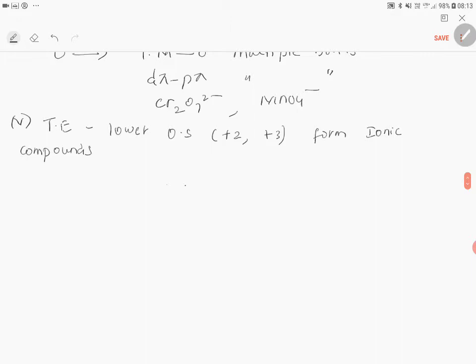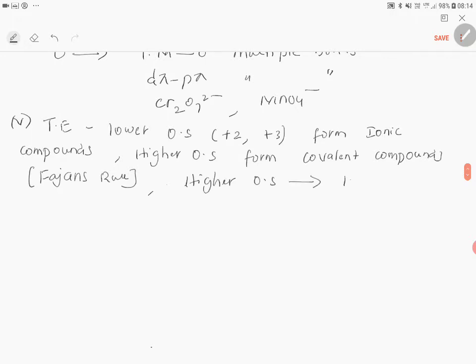While higher oxidation states form covalent compounds too. This is in accordance to Fajan's rules, what you have learned in chemical bonding last year. Further, higher oxidation states are formed due to the loss of n minus 1 d electrons.